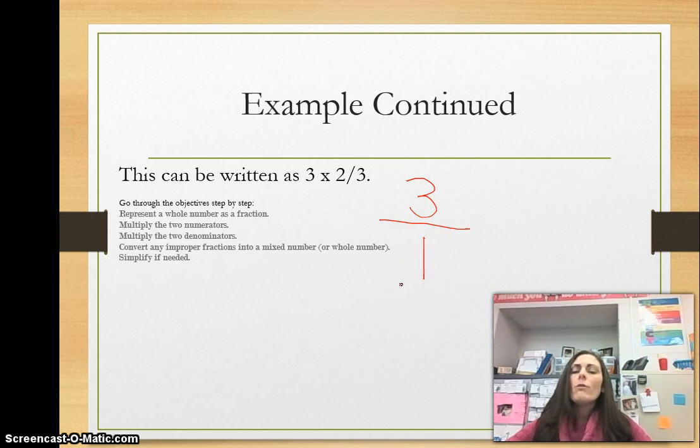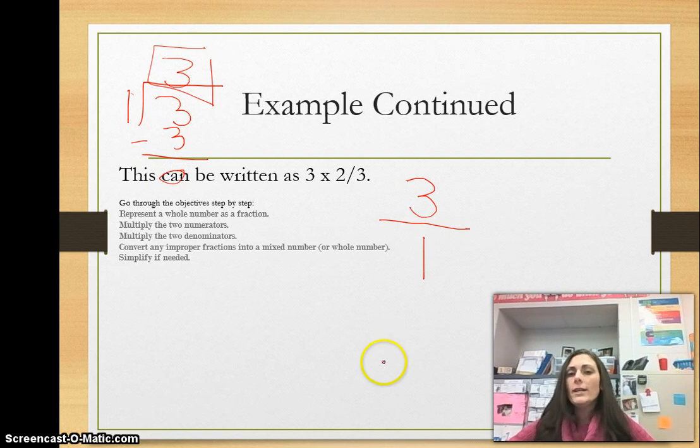Now the reason why we put a one as the denominator, because since that is improper, if we take one into the numerator, one goes into three three times. So as you can see there, we have three wholes. So putting a one as a denominator does not change the meaning of it. It still keeps it as three wholes. So now we have three over one times two-thirds.